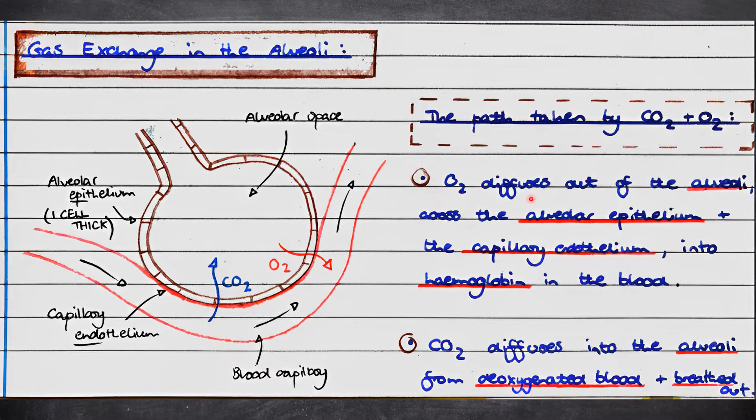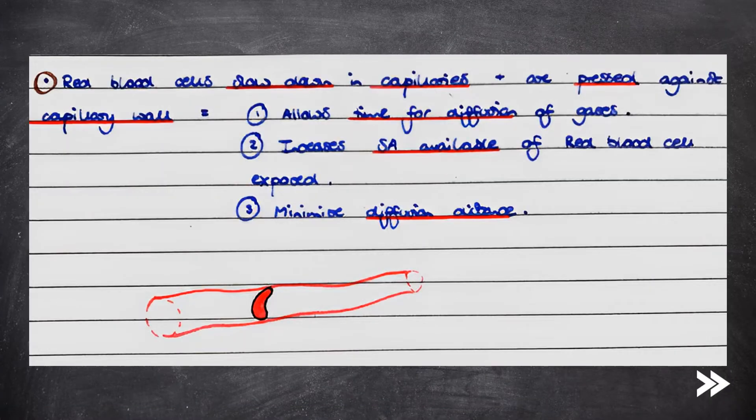So let's zoom in and look at gas exchange in the alveoli specifically. Oxygen diffuses out of the alveoli across the alveolar epithelium and the capillary endothelium into hemoglobin in the blood. Make sure you do not confuse epithelium and endothelium. It is the alveolar epithelium and the capillary endothelium. Meanwhile, carbon dioxide diffuses from the deoxygenated blood into the alveoli and is breathed out.